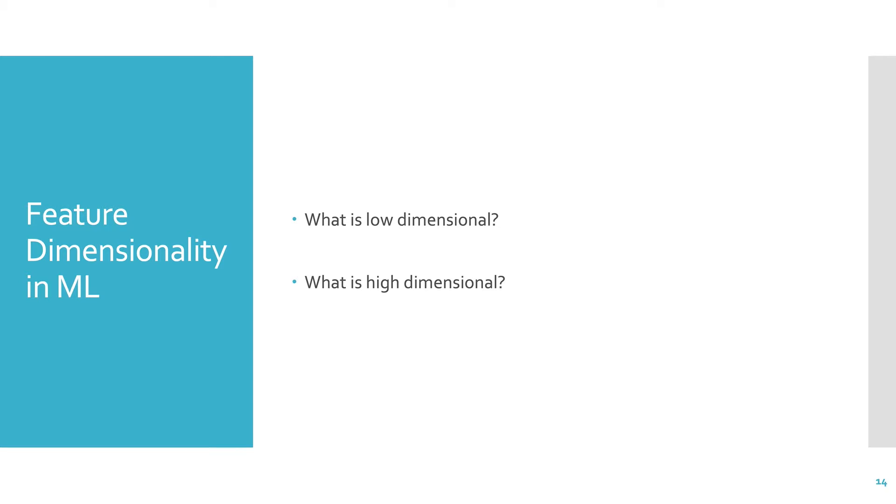So low-dimensional is something that's probably like under 100, and high-dimensional is usually in the tens of thousands all the way up to millions. So the dimensions can get really high when there's a lot of data that you're dealing with.